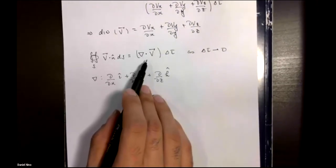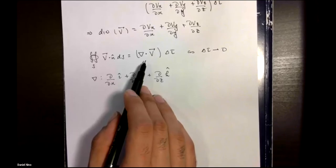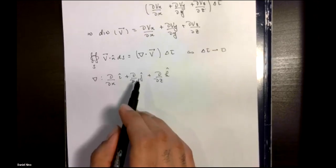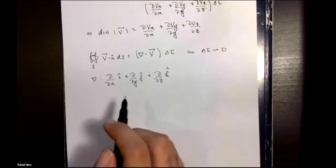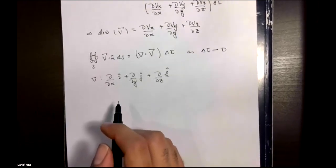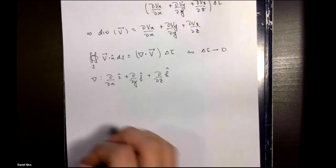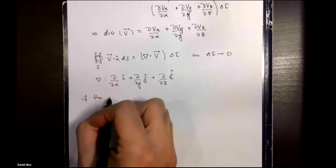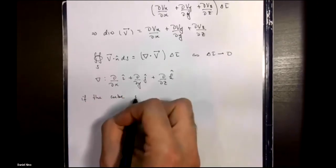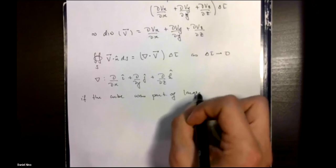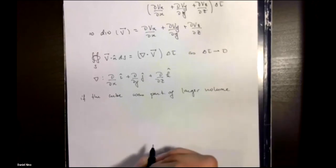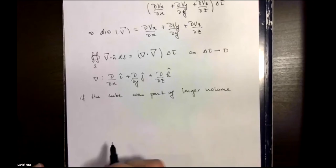We did this for an infinitesimally small cube where we could approximate its dimensions to be so small that the components of the vector field were essentially constant. In general, we usually work with larger volumes. We can't always consider infinitesimally small volume elements.